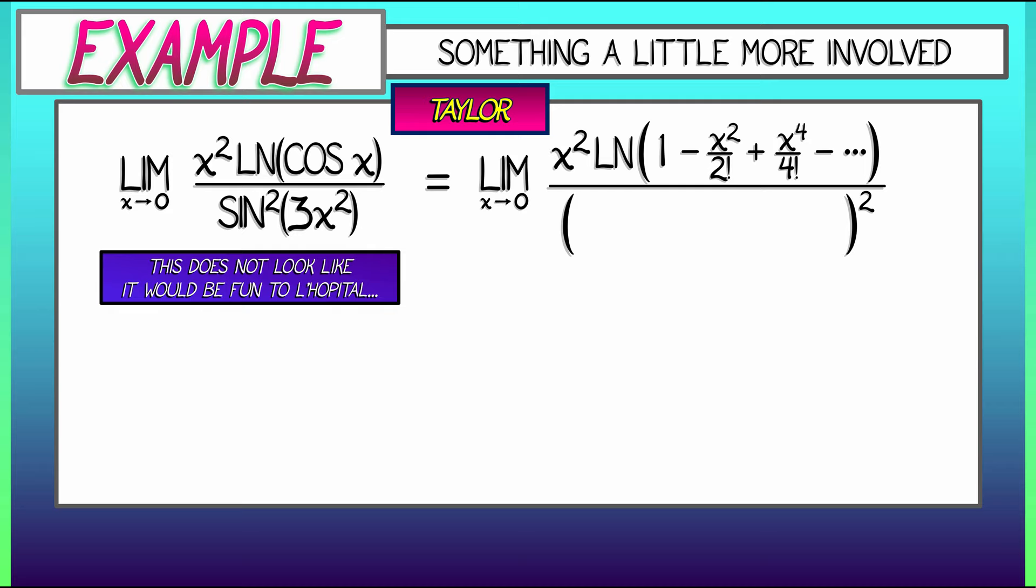Down below, what I need to do is expand out sine of quantity 3x squared, and then square that. So what is that? Well, let's see. 3x squared minus 1 over 3 factorial times quantity 3x squared cubed, and then a whole bunch of higher order terms.